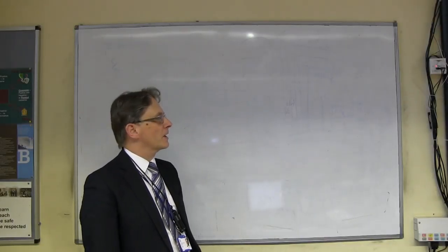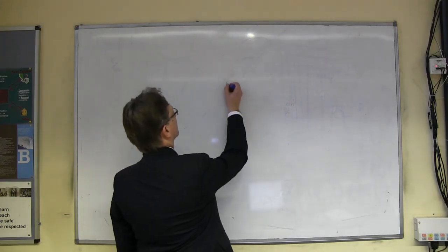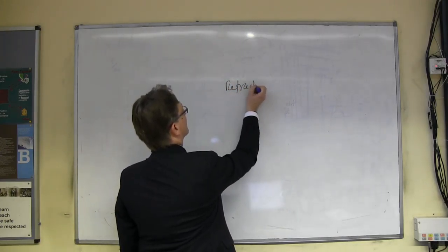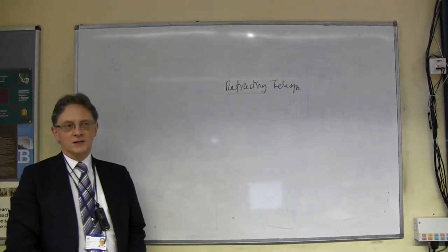Okay, let's make a start then. Hopefully today we're going to finish off the section on telescopes. And if you remember last time, we had a look at the first type of telescope, which is called a refracting telescope.